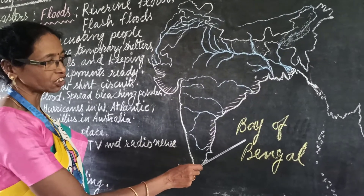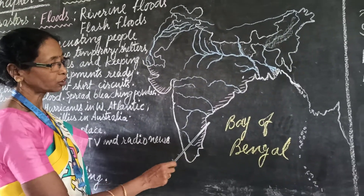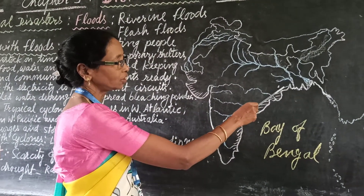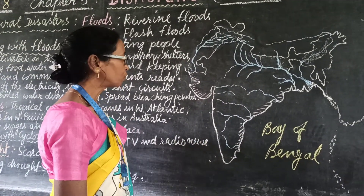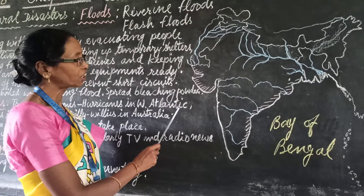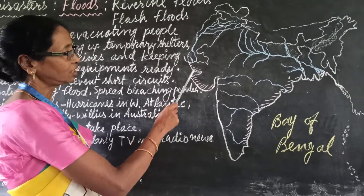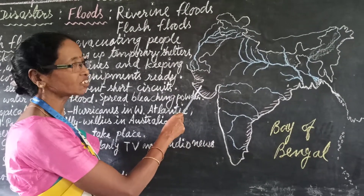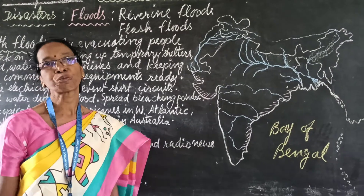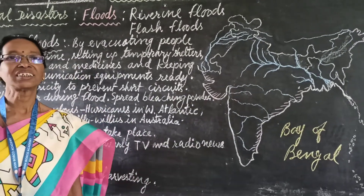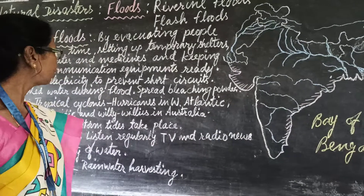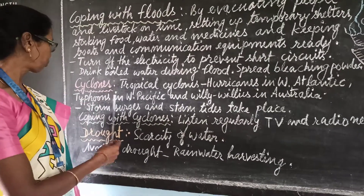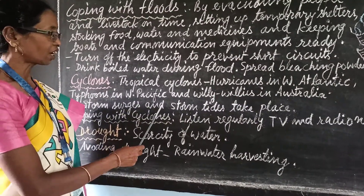Due to depression over the Bay of Bengal, the coasts of Tamil Nadu, Andhra Pradesh, Orissa, and West Bengal are badly affected. Sometimes when there is depression over the Arabian Sea, parts of Gujarat and the western coast can also be affected. During a cyclone, the tides rise all of a sudden, and there are two associated phenomena: storm surges and storm tides.